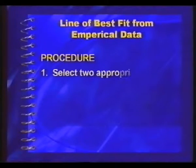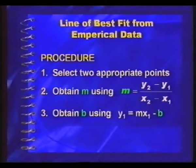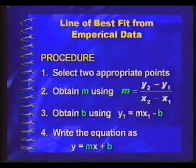When we conduct an experiment, the data we collect is called empirical. Now what do we do when we have empirical data and we suspect that a line passes through a set of points? You do the same thing as before except that the numbers are generally a little bit more awkward and some of the points don't quite lie on the line. You take two appropriate points and do the same thing: find the gradient, find the intercept. Select two appropriate points, obtain the gradient using the same formula as before, use one point to get the b value, and write the equation as y = mx + b.